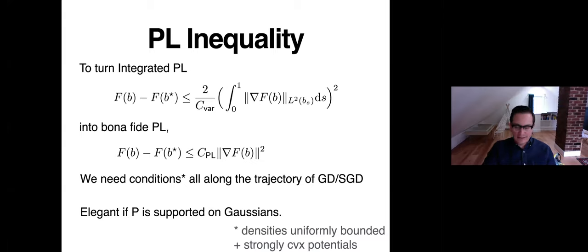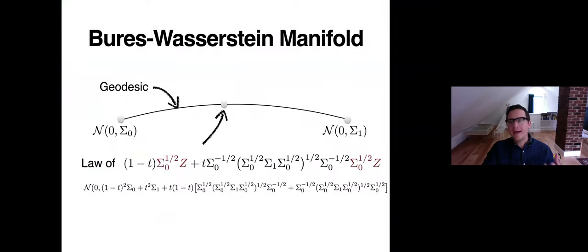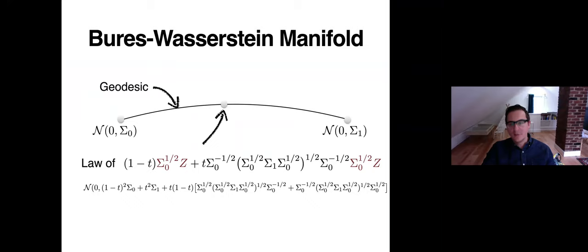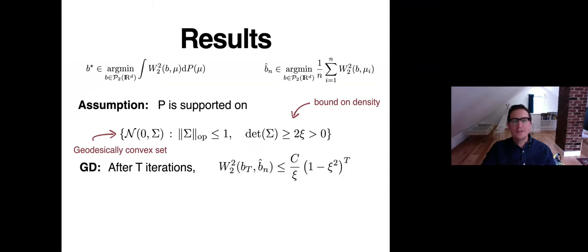The Bures-Wasserstein manifold is the manifold of positive semidefinite matrices — covariance matrices of Gaussians — equipped with the Wasserstein distance. There are completely explicit formulas for points along geodesics, which are Gaussians with specific covariance matrices. This yields our final result for gradient descent and stochastic gradient descent on the Bures-Wasserstein manifold.